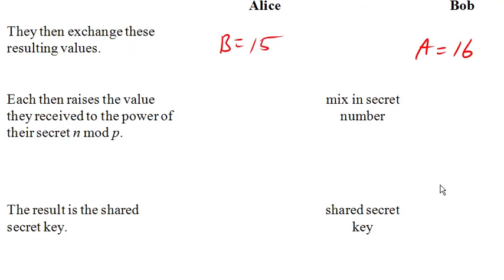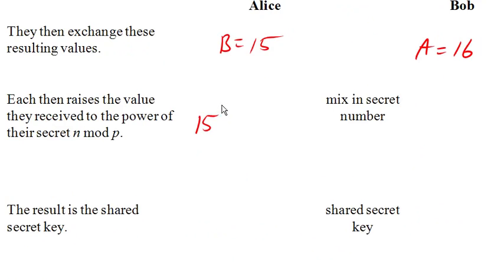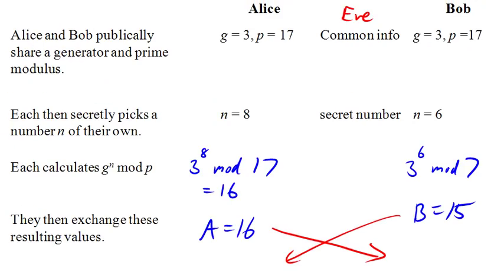So now each of them are gonna take the number that they just received and raise it to the power of their secret number. So remember, Alice's secret number was 8. So she's gonna calculate 15 to the 8th mod 17, while Bob is gonna take Alice's number, raise it to his secret number of 6 mod 17.